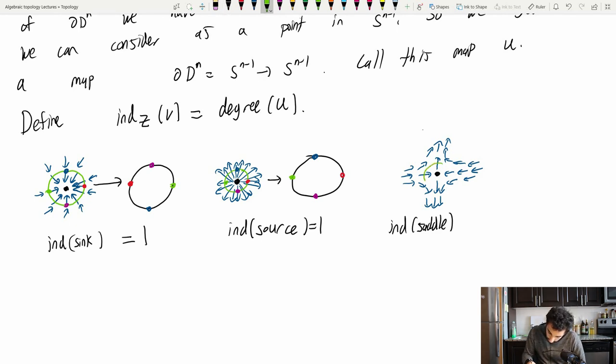So this here is called a saddle singularity. And let's trace around what's going on here. So again, I'll keep track of some points to help me anchor what's going on. So this is going to map over. This is that u map. And at the red point, it maps all the way to the left. At the blue point, it maps up. At the green point, it maps right. And at the purple point, it maps down. And so as I go around this green circle counterclockwise, I trace around the black circle clockwise. So it's reversed orientation. And therefore, the index here is minus one.